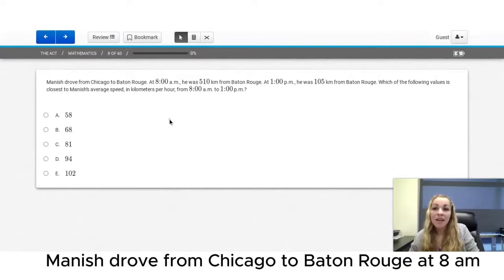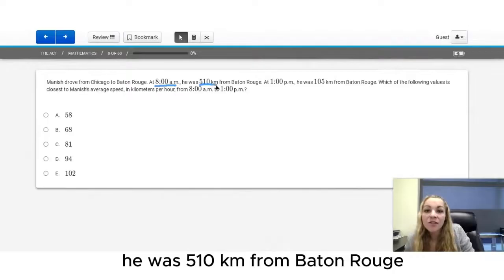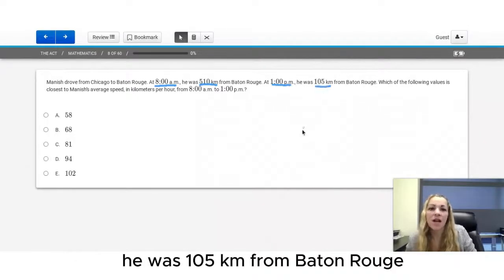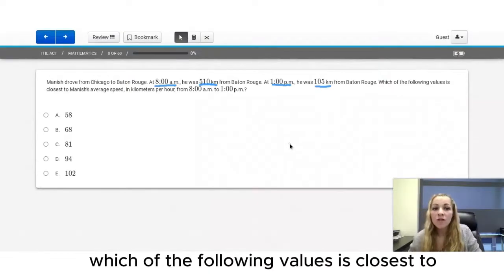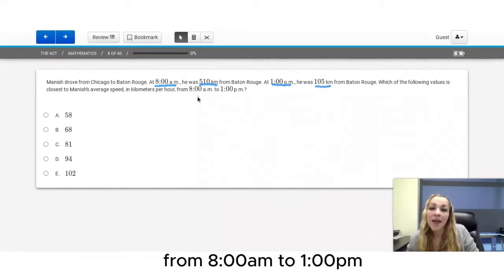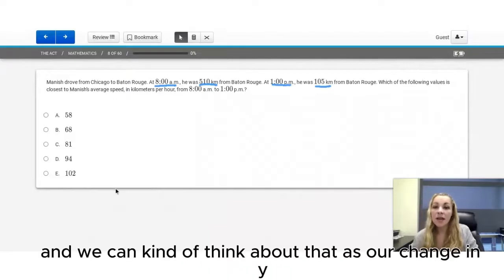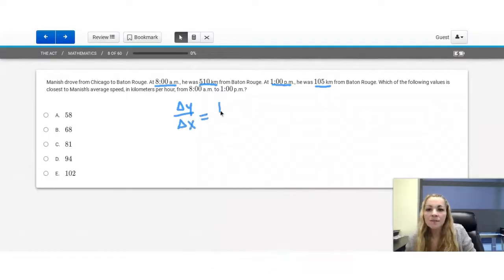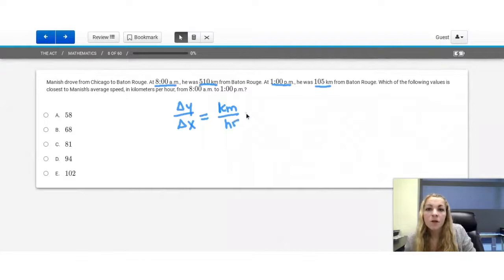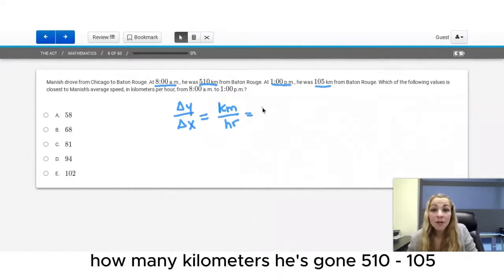Question number eight. Manish drove from Chicago to Baton Rouge. At 8 a.m., he was 510 kilometers from Baton Rouge. At 1 o'clock p.m., he was 105 kilometers from Baton Rouge. Which of the following values is closest to Manish's average speed in kilometers per hour from 8 a.m. to 1 p.m.? So we're trying to find average speed, and we can kind of think about that as our change in y over our change in x. In this case, we're looking for kilometers per hour.